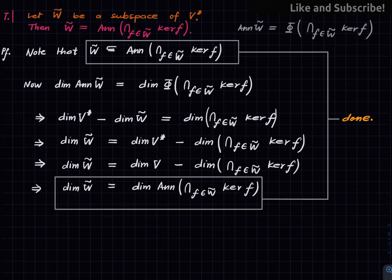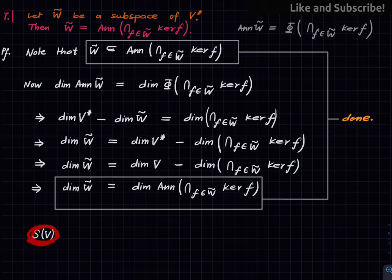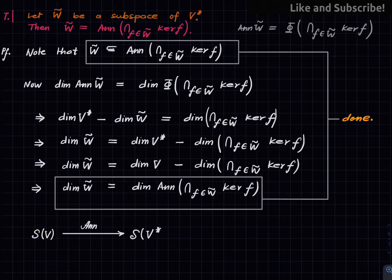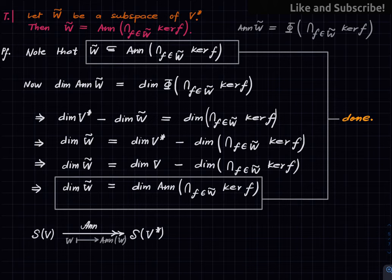We have a map — the annihilator map — from the set of all subspaces of V to the set of all subspaces of V*, which takes a subspace of V and outputs its annihilator. What we have just shown is that this map is surjective, because every subspace of V* is the annihilator of something. One can also ask: is this map injective? Yes it is, and we will show this.